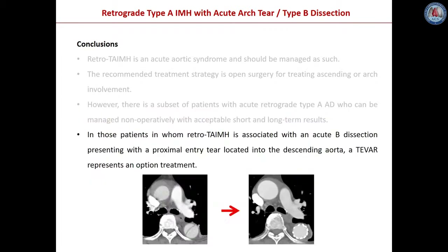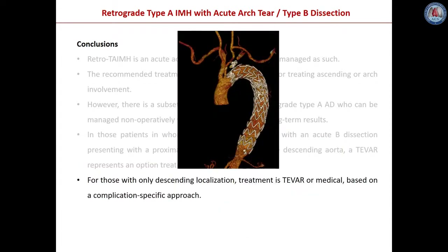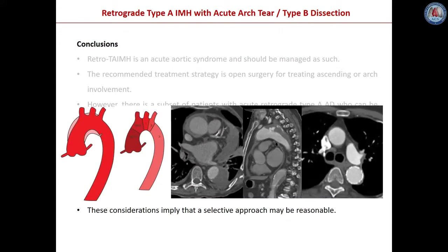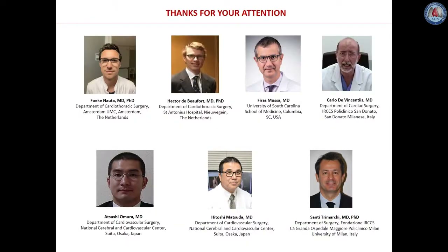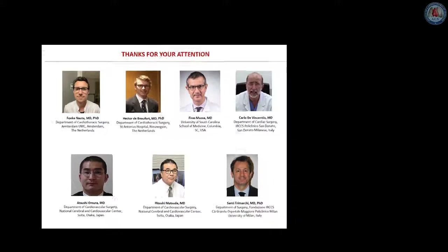In those patients in whom retrograde Type A intramural hematoma is associated with acute Type B dissection presenting with the proximal tear located in the descending aorta, TEVAR represents a treatment option. For those with only descending localization, treatment is TEVAR or medical, based on a complication-specific approach. All these considerations imply that a selective approach might be reasonable. I wish to thank all the co-authors of this manuscript and thank you all for your attention.